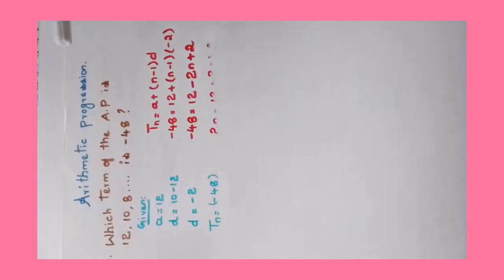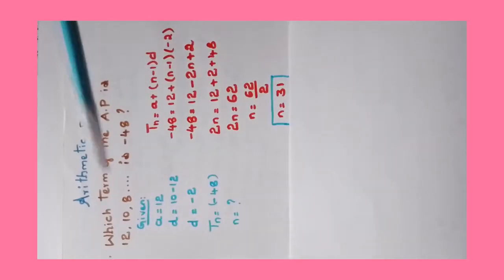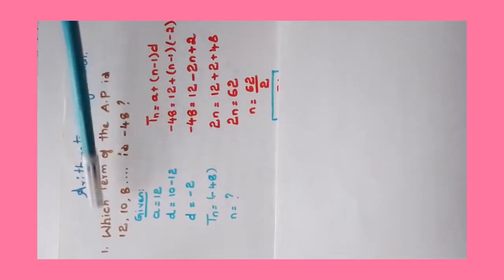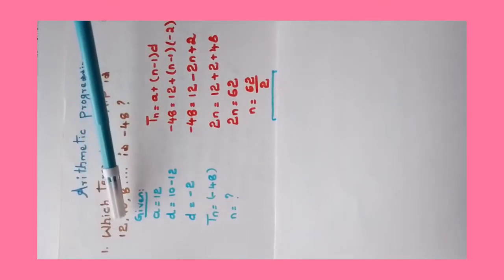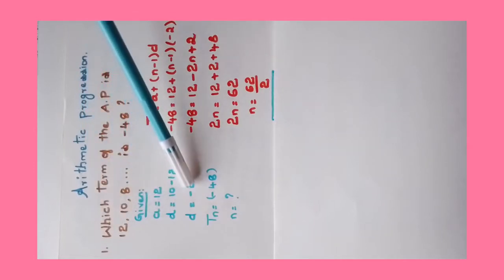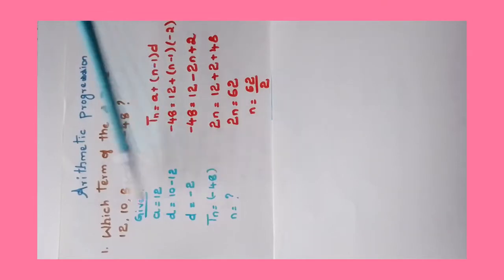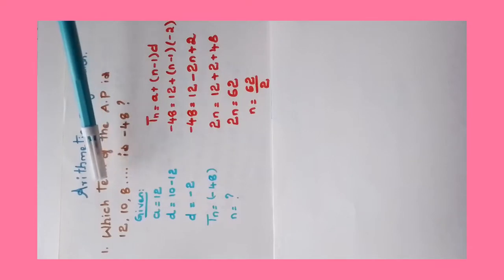In any sum we have to list out what is given. Given is a = 12 (first term) and d = common difference = 10 - 12 = -2. Tn, the term is -48. Which term they have asked? So n we have to calculate.